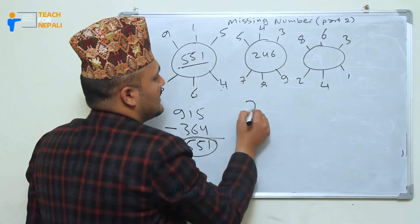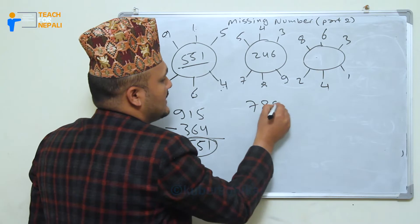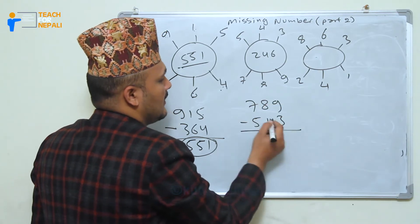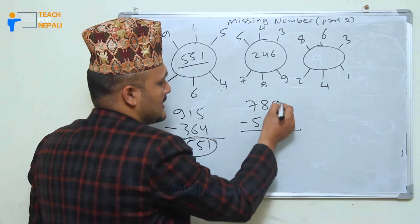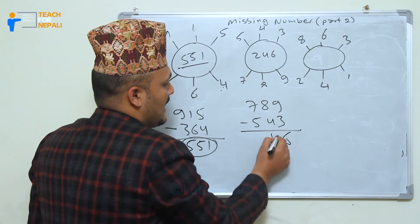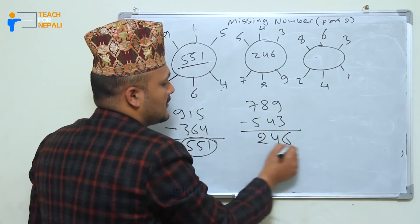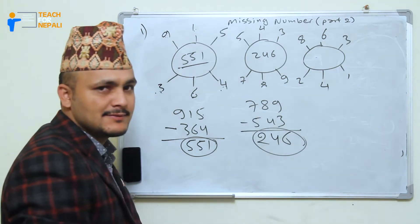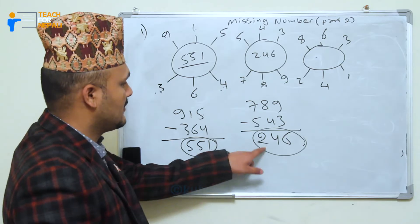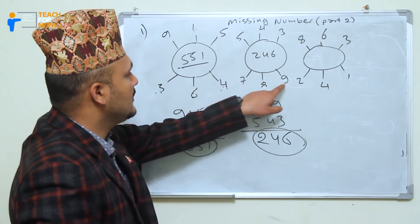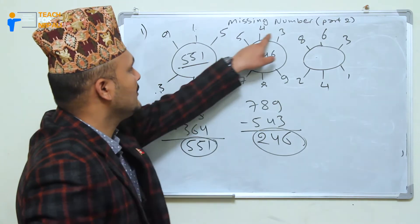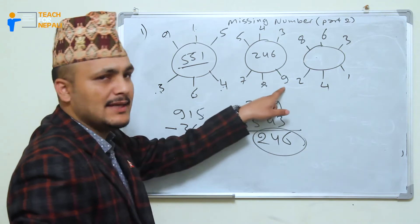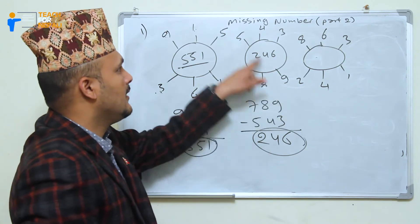Seven, eight, nine — seven hundred eighty nine minus five hundred forty three. What I got on that: two hundred forty six, two hundred forty six. So seven hundred eighty nine, you know five, four, three — five hundred forty three.